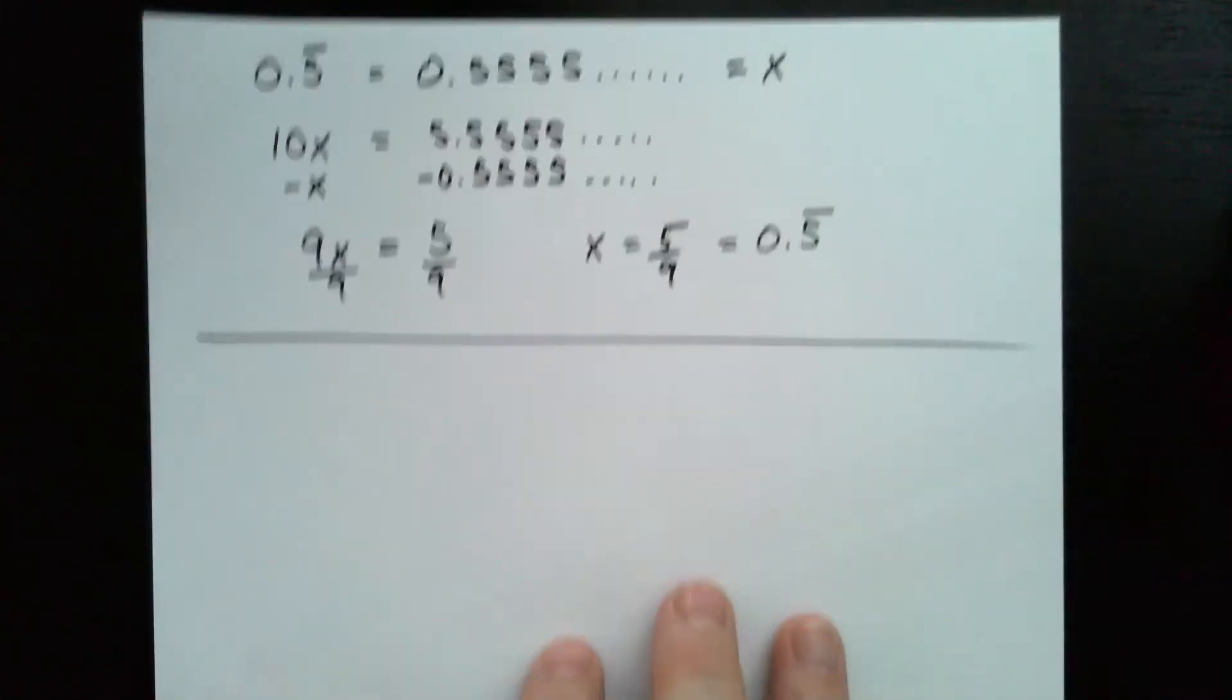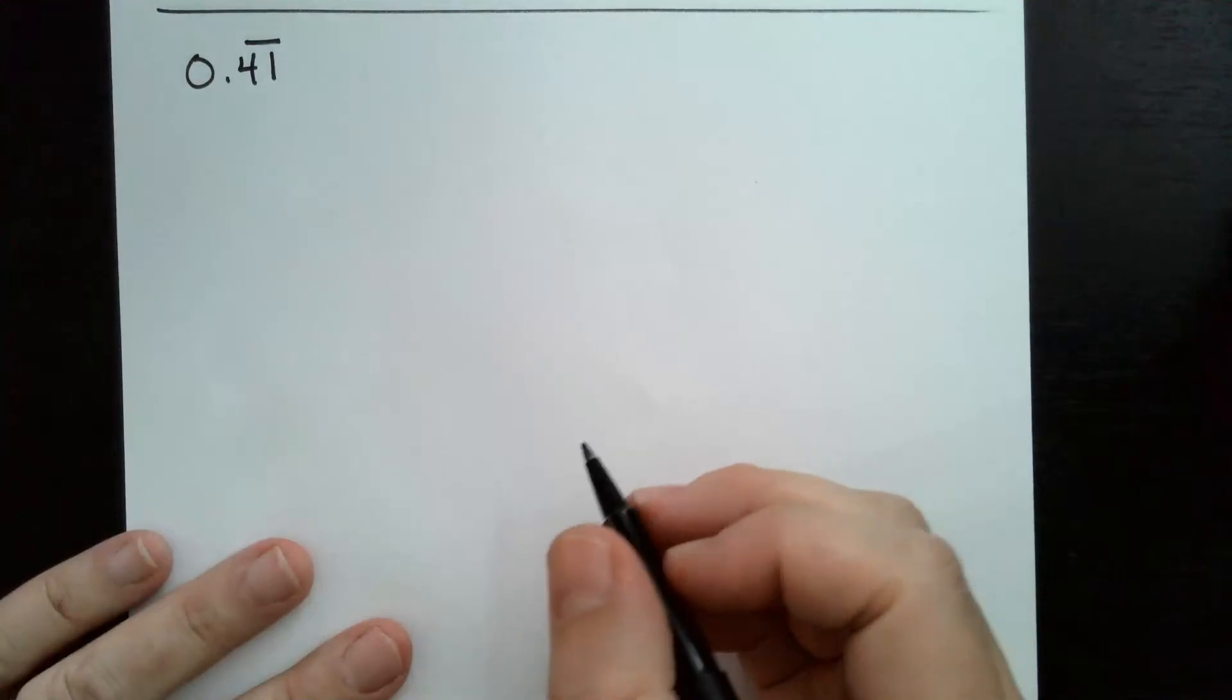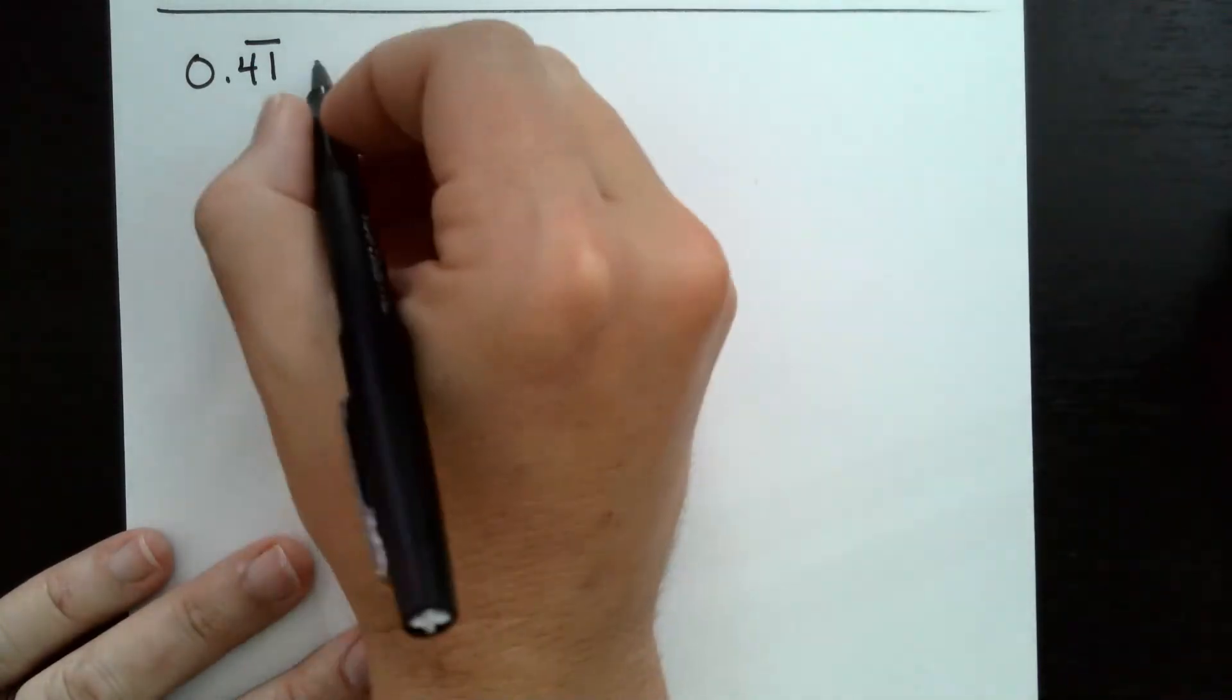Okay, let's do another one. So on this one, I have 0.41 repeating. So now it's two decimals that are repeating, decimal values.